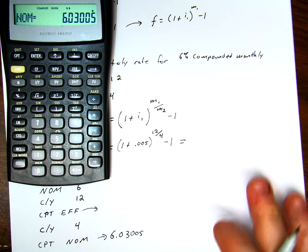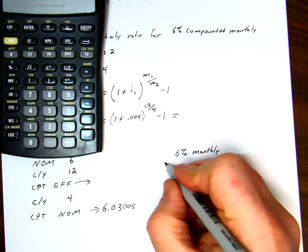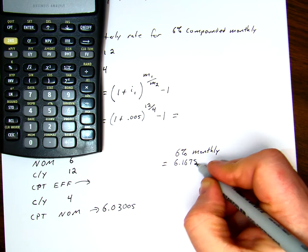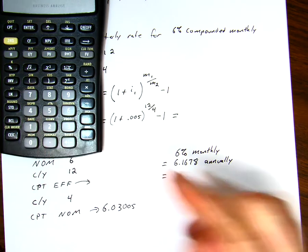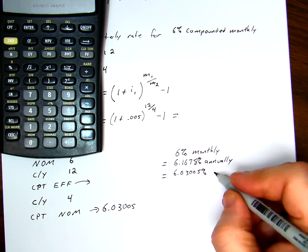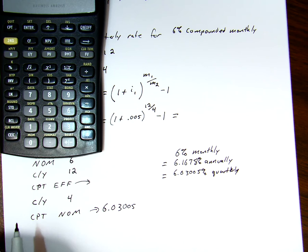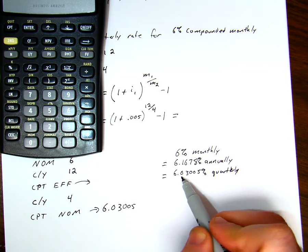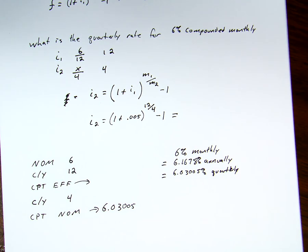So, we now have a couple of statements we can make. We're going to say, 6% monthly is equivalent to 6.1678% annually. And it's also equivalent to 6.03005% quarterly. All the same rate. All the same values. They would all take the same amount of money to grow within a year.